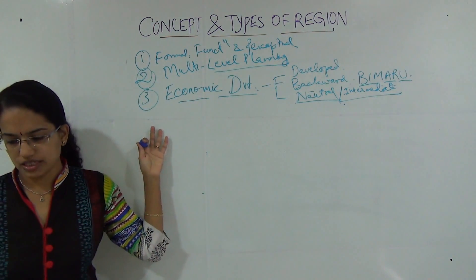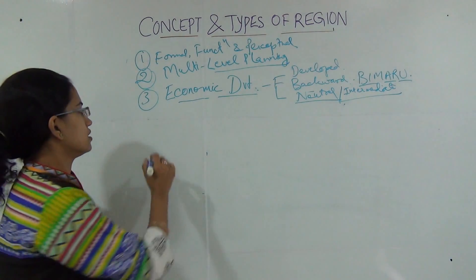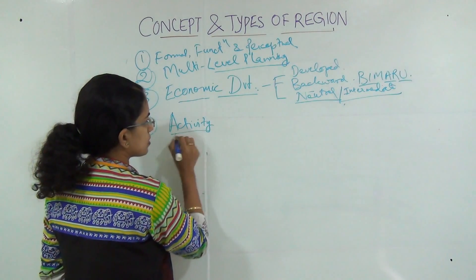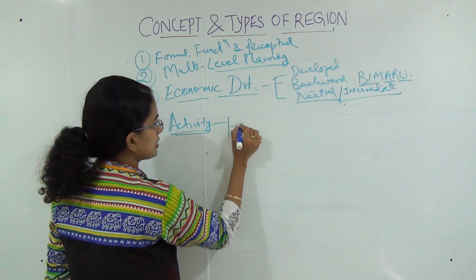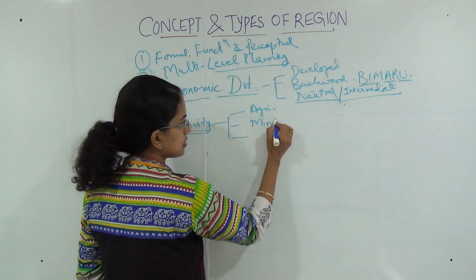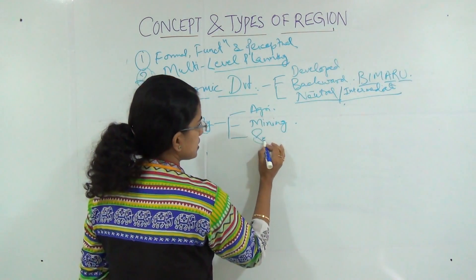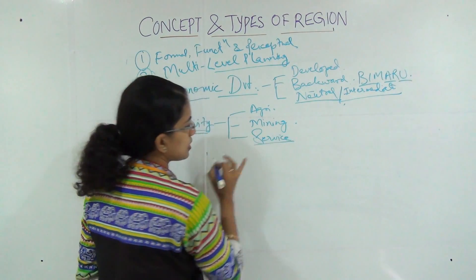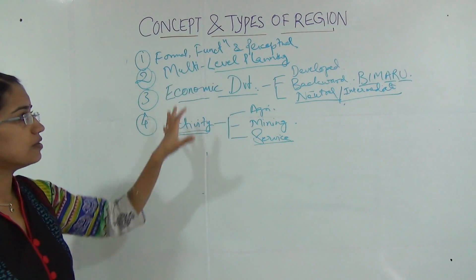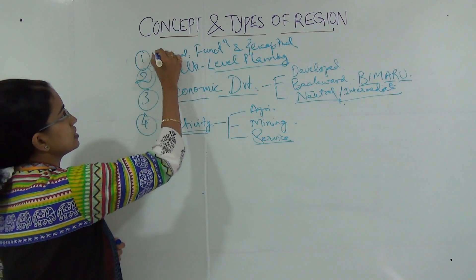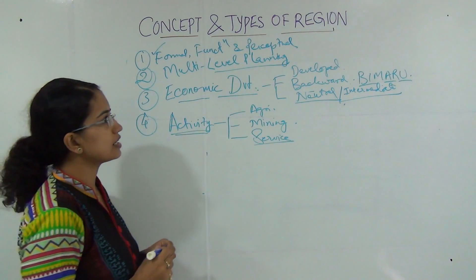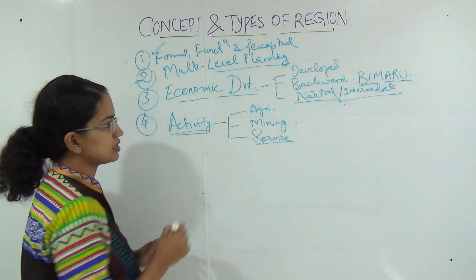The fourth classification of the region is based on activity. Based on activity, I can classify the region as either an agricultural region, a mining region where mining is the main activity, or a service industry region where the service sector is the main industry. So I am classifying regions on various levels. The first — formal, functional, and perceptual — is the major classification under the concept of region.